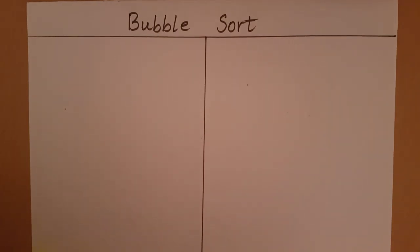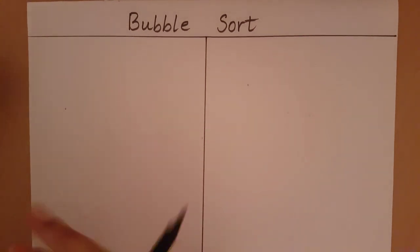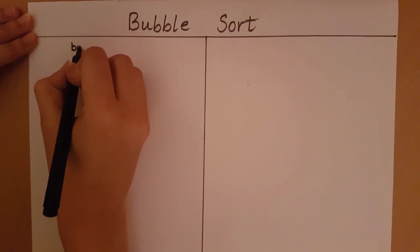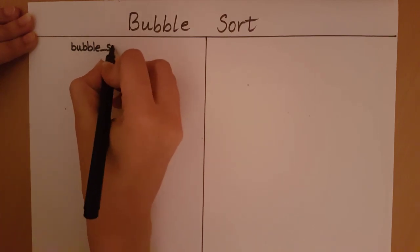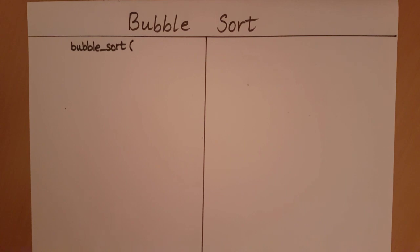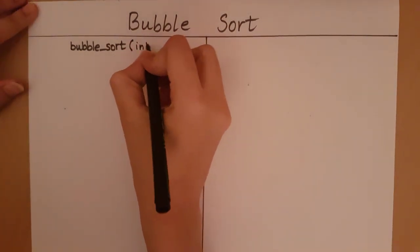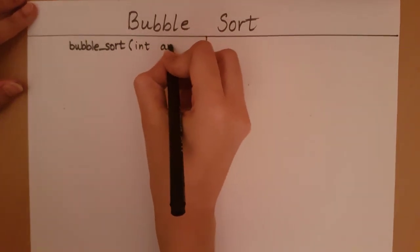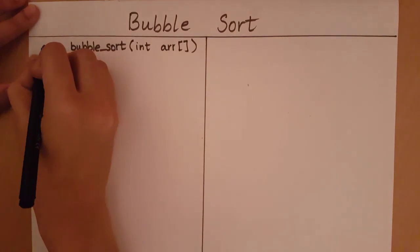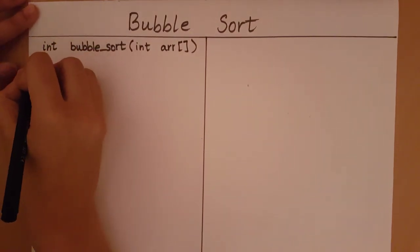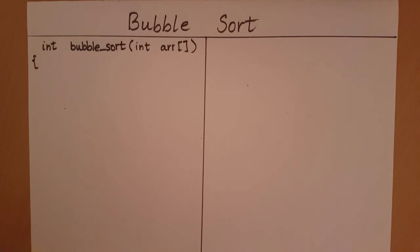In this video, we will take a look at how to write the program for the bubble sort algorithm. Let's start by defining the function. My function will take in an array as an input and return the sorted array. For this example, I'm taking the array as integer type. I'm going to store the length of my array in a variable called n.